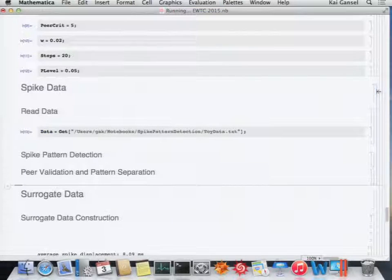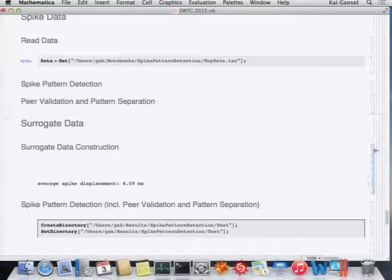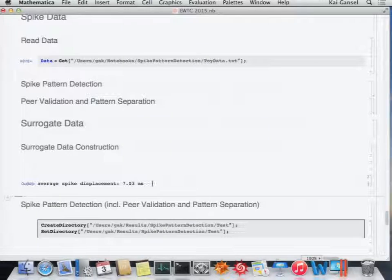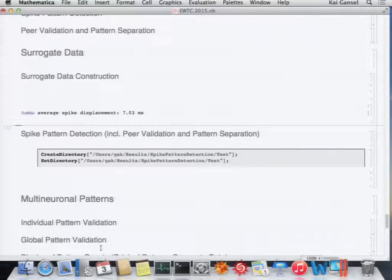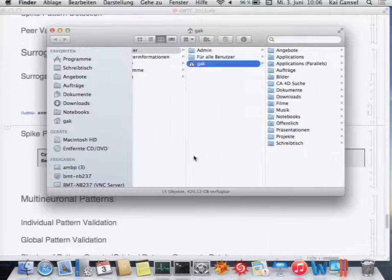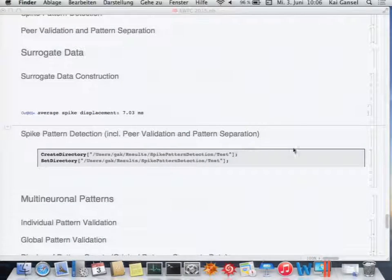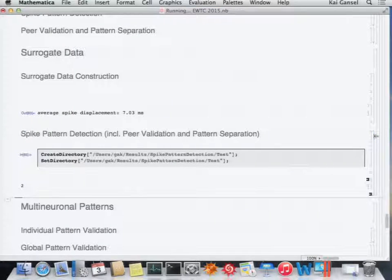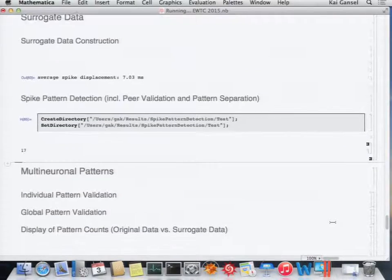Long? Done. Now, this was the original data. Now we construct the surrogate data. I told the notebook to do 20 surrogate datasets. The average spike displacement in time was 7.03 milliseconds. Now we do the same thing in each of these 20 surrogate datasets. 1, 2, 3, 4, 5, 6, 7, 8, 9, 10, 11, 12. Done.